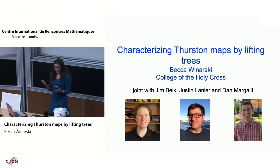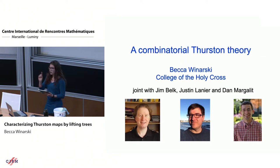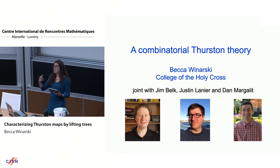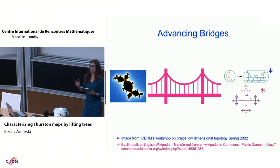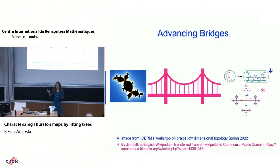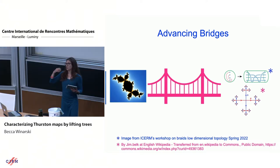While preparing this talk, I realized the title I submitted — 'Characterizing Thurston Maps by Lifting Trees' — was not quite as accurate as 'A Combinatorial Thurston Theory.' That also fits better within the mini course on Thurston theory. What we're interested in is advancing bridges within complex dynamics, and particularly a bridge between complex dynamics and low-dimensional topology and geometric group theory.